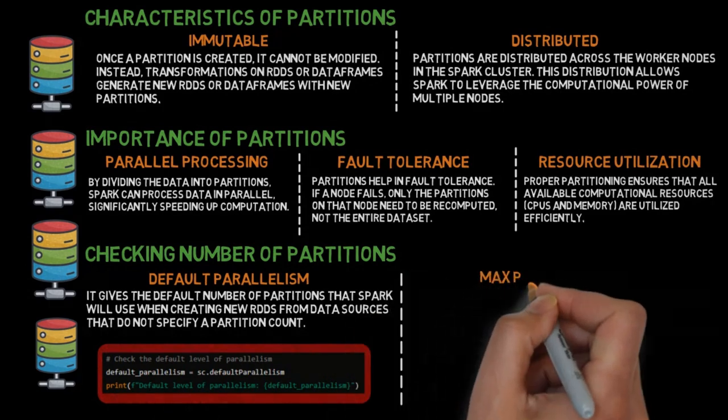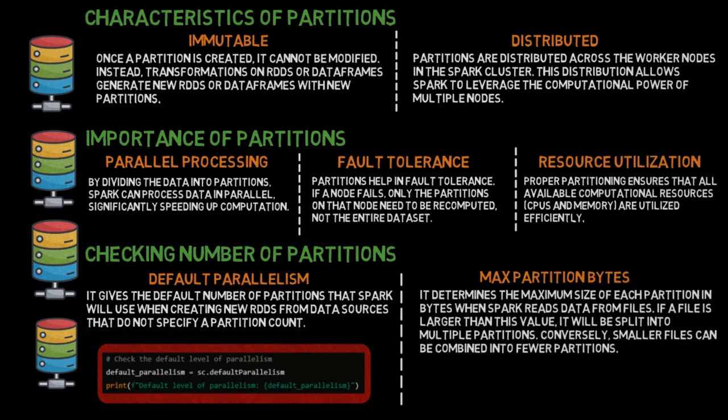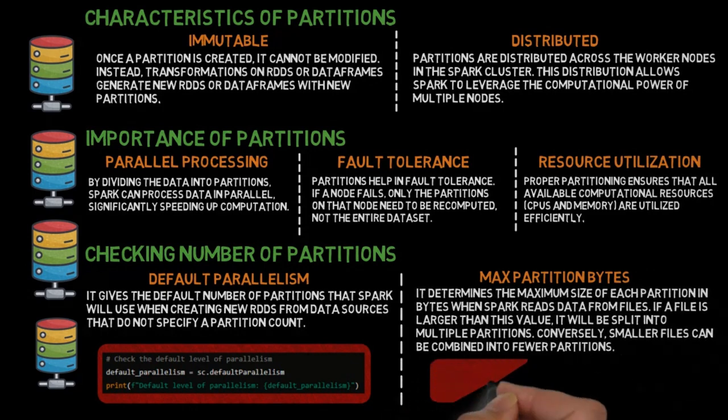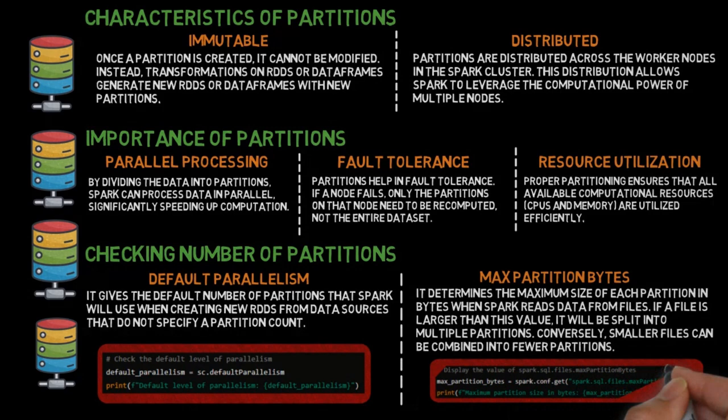Max Partition Bytes: It determines the maximum size of each partition in bytes when Spark reads data from files. If a file is larger than this value, it will be split into multiple partitions. Conversely, smaller files can be combined into fewer partitions.